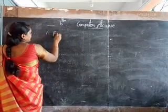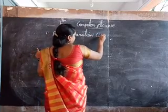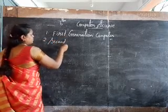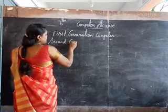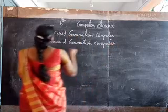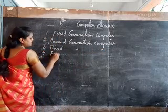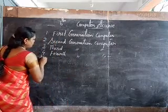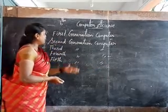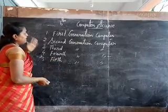Types of computer generation: the first one is first generation computer, the second one is second generation computer, the fourth one is fourth generation computer, and the fifth one is fifth generation computer. Let us discuss about them one by one.